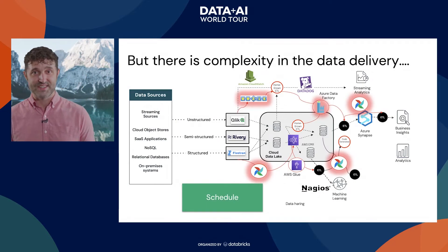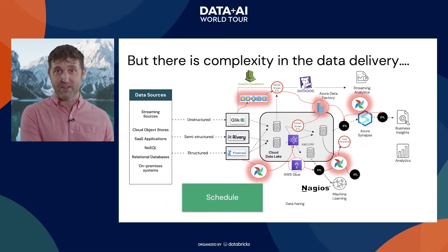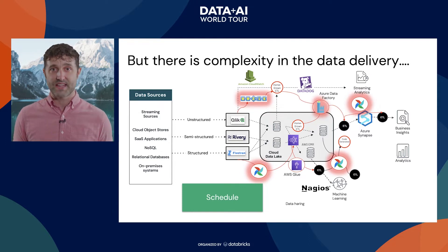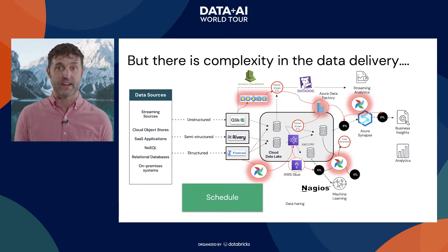That brings us to the next challenge: these things need to run on a schedule regularly, and it's more than just running on a schedule. You often need to understand dependencies — one dataset cannot be updated until its parent datasets are updated. So you'll see a variety of schedulers like Oozie, Airflow, or even Azure Data Factory brought in to coordinate and orchestrate all of these different systems.